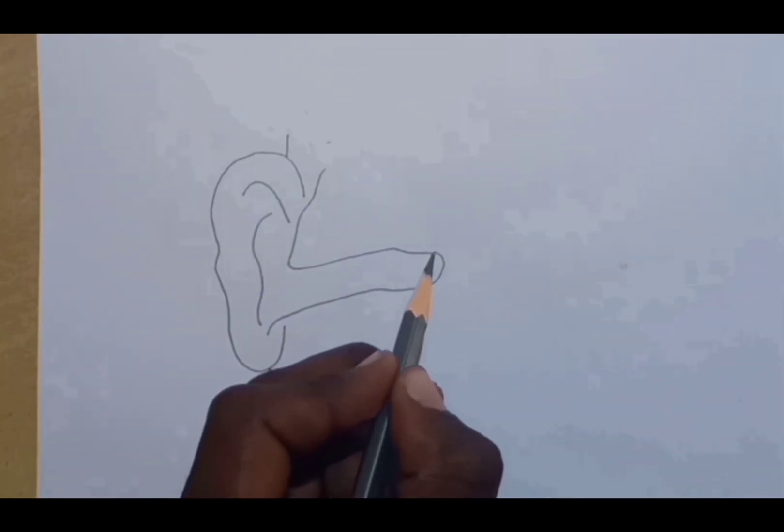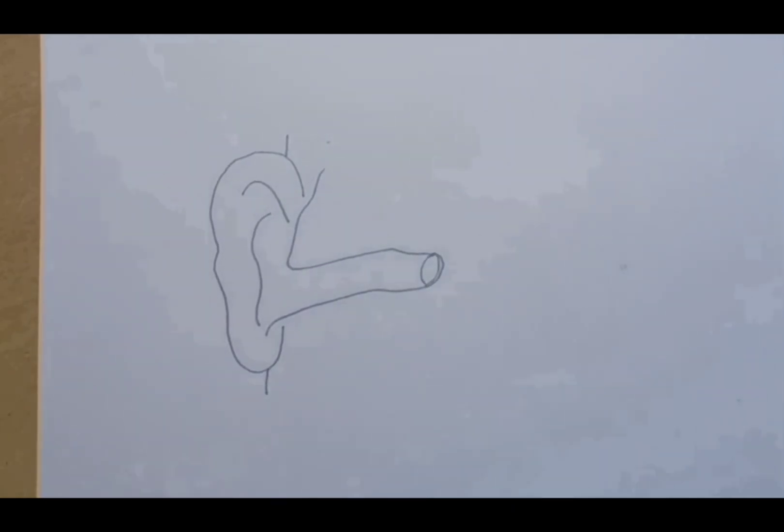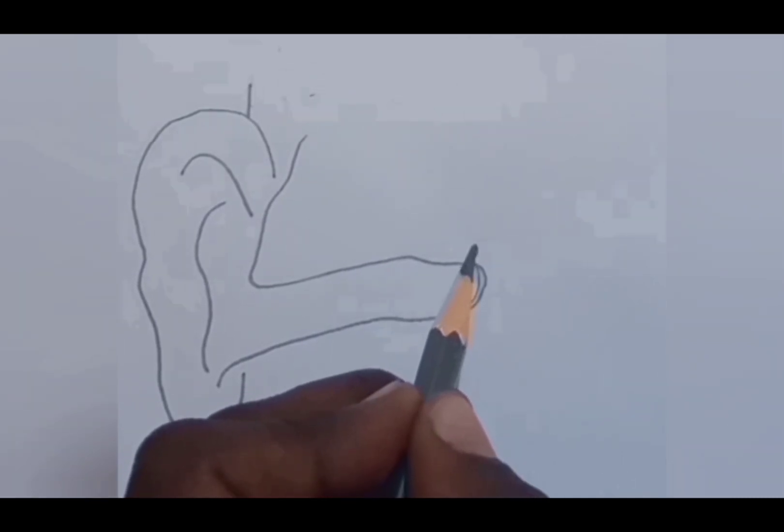Now drawing the auditory canal. This is the structure of the auditory canal. At the end of the auditory canal, drawing a circular structure like this, which is called the ear drum.